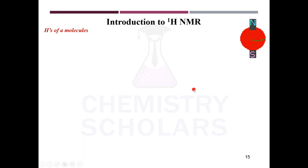We are here to learn about a very important and the most beautiful technique in organic spectroscopy, and that is NMR. You can watch the previous videos on UV, mass, and IR that I have prepared. All these techniques are used for structural elucidation of molecules. IR gives you information about functional groups, UV gives you information about electronic transitions, and mass gives you information about the fragmentation pattern. NMR gives you information about the hydrogens in the molecule.